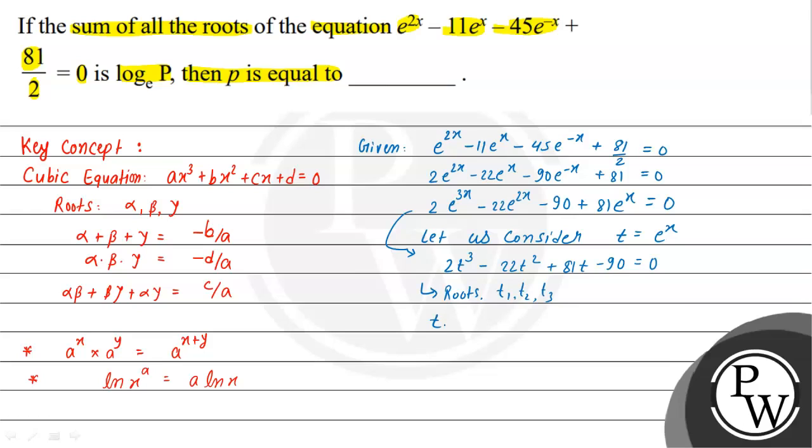The product t₁·t₂·t₃ = -d/a = -(-90)/2 = 90/2 = 45. Since we considered t = e^x, this means e^(x₁)·e^(x₂)·e^(x₃) = 45.